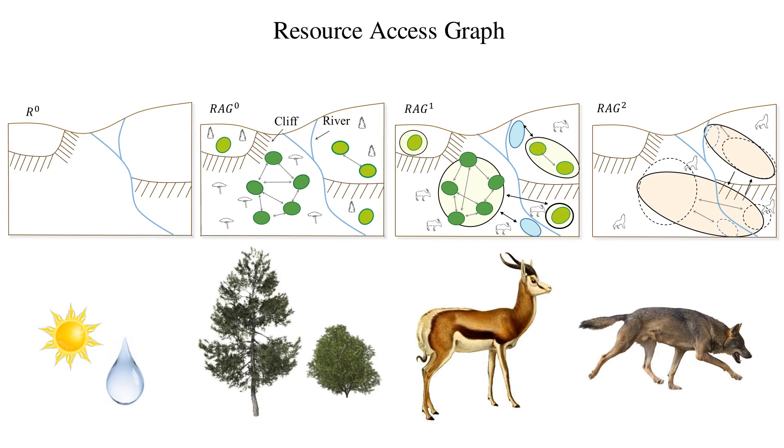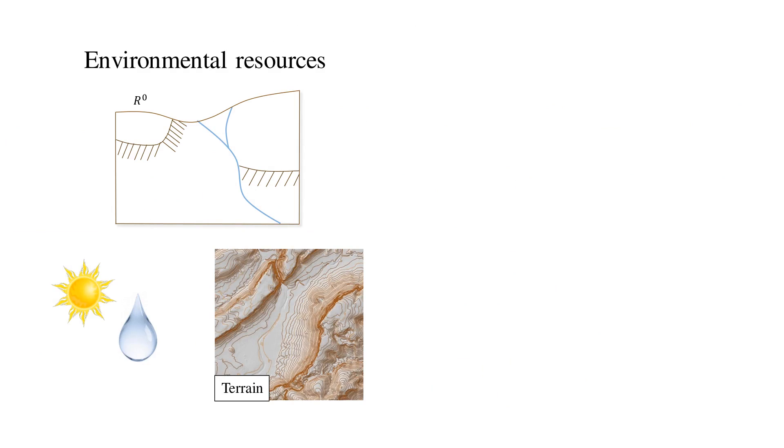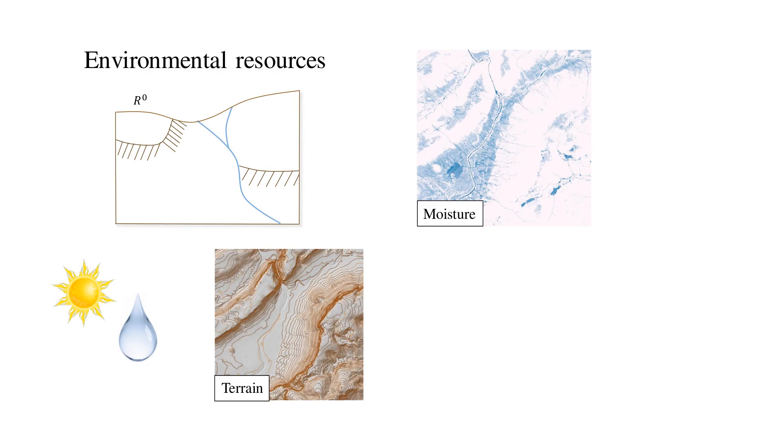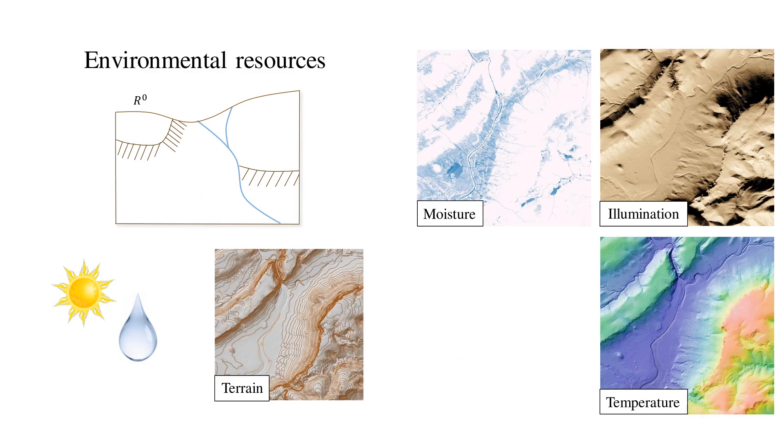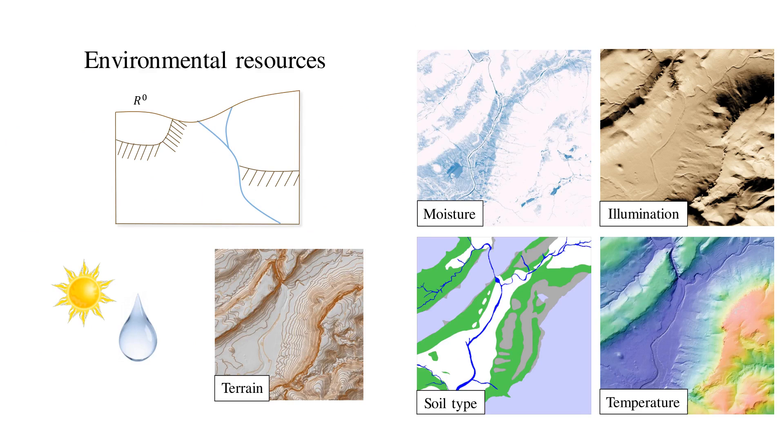We analyze the terrain to compute the environmental resources needed by the plants as the first level of the resource access graph. In particular, we compute the ground moisture, illumination, temperature, and the user can also input a supplementary map indicating the soil type.